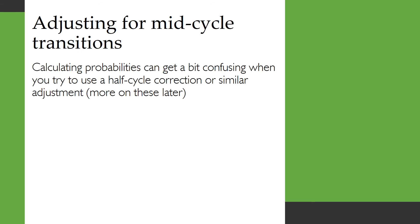Just a small note when you're adjusting for mid-cycle transitions. So calculating probabilities can get a bit confusing when you try to use a half-cycle correction or similar adjustment. I'll have some more detail on these later when we cover them.